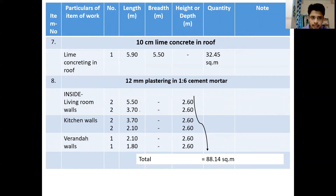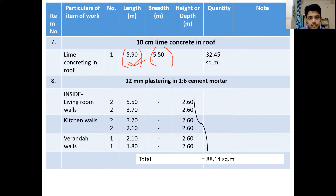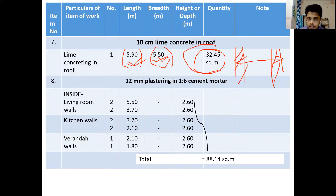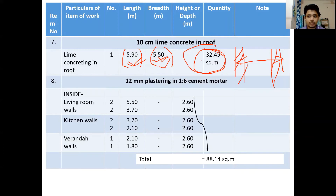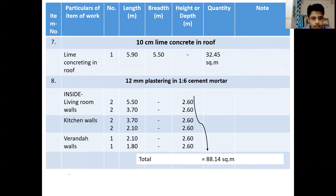Next is lime concreting work on the roof. This lime concreting is applied from the inside face of the parapet wall to the inside face of the parapet wall on the other side. Since it is applied as a layer for waterproofing, it is measured in square meters, not cubic meters. Similarly, DPC and 10 cm brick work are also measured in square meters — this is important to remember.